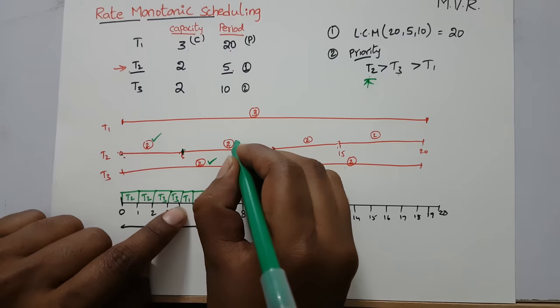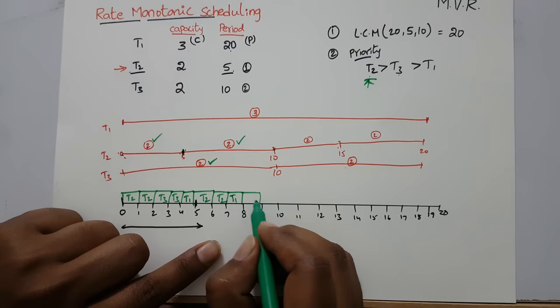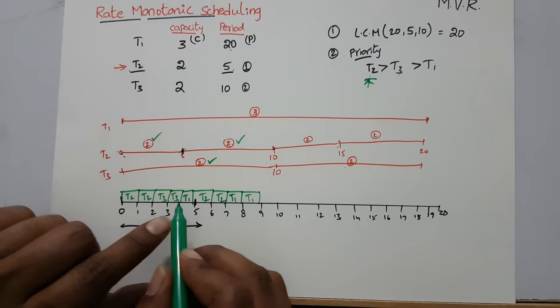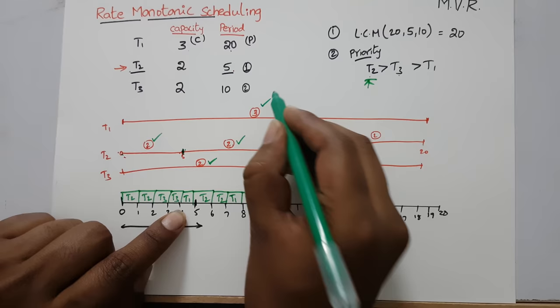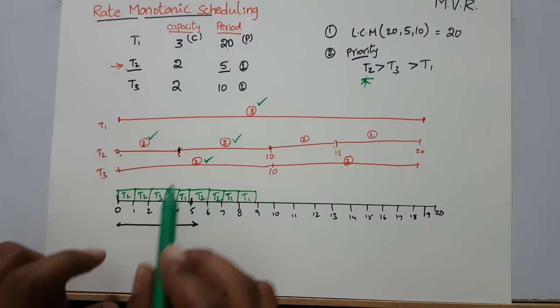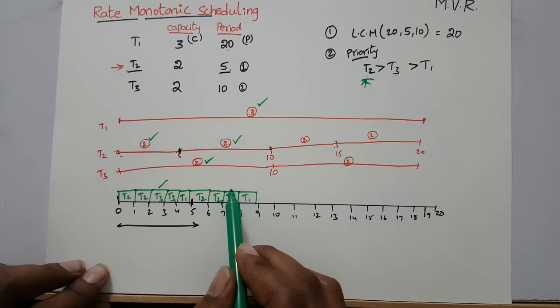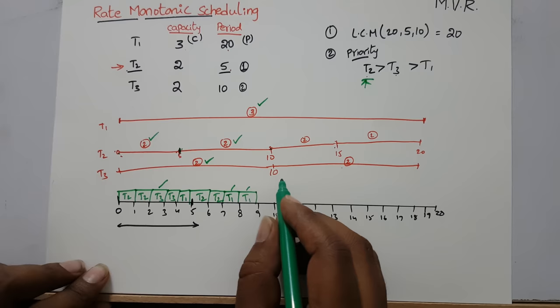T2 executes 2 units from time 5, completing its second interval. Then T1 resumes and executes its remaining 2 units — second and third units — finishing at time 9. From 9 to 10 there is nothing to execute because T3 completed its 2 units from 0 to 10, T2 has executed 4 times total, and T1 has completed all 3 of its required units. At time 10, T2 starts again for the interval 10 to 15.